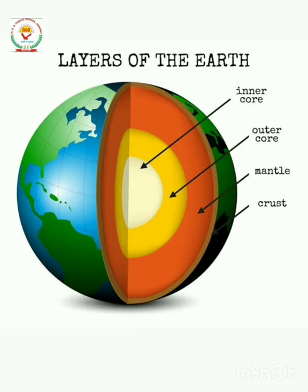As you can see in the image, the Earth is divided into three layers. The outermost layer is called the crust, the middle layer is called the mantle, and the innermost layer is called the core. The innermost layer is again divided into two parts: the outer core and the inner core. Different types of rocks are present in these layers of the Earth.